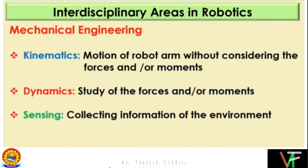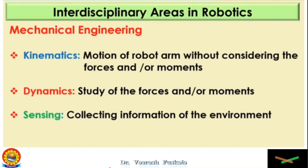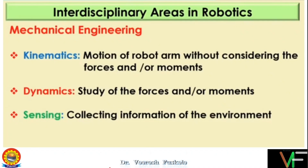Next we have dynamics. Dynamics includes information about the force required to move a linear joint, or in the case of a rotary joint, it will be torque. In the case of a linear joint, you will be calculating forces, and in the case of a rotary joint, you will be calculating torque. Because if we want to lift a weight, we need to know what force or torque the motor has to apply so that we can lift that load. Sensing is the third part of mechanical engineering, which is collecting information from the environment with the help of sensors.